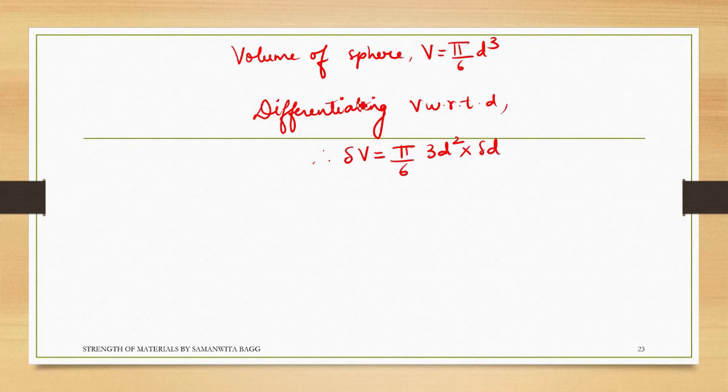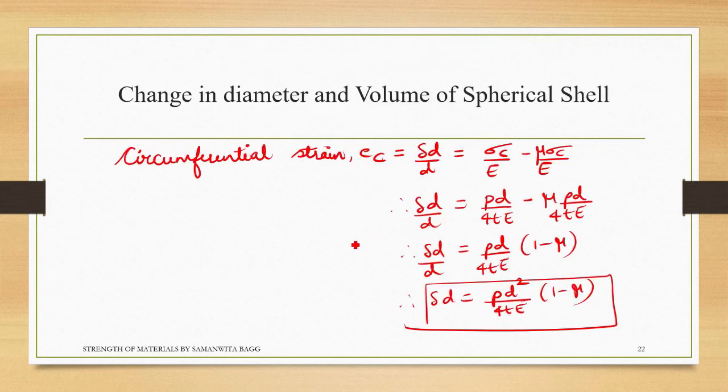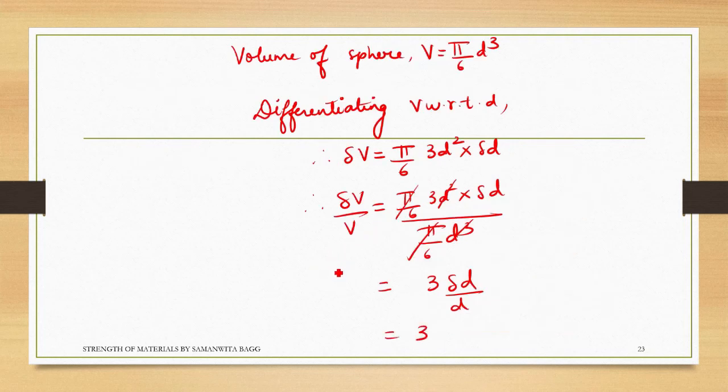Into delta_d—I am also differentiating partially. Now I will be dividing both sides by volume. So I get delta_V by V is equal to pi by 6, 3d squared into delta_d, divided by pi by 6 d cubed. Pi by 6 gets cancelled and d squared and d cubed gets cancelled. What remains is 3 delta_d upon d.